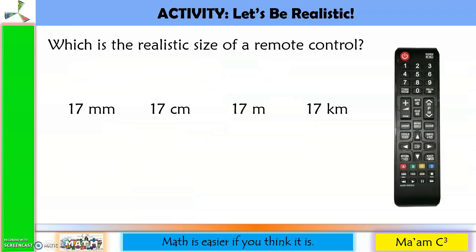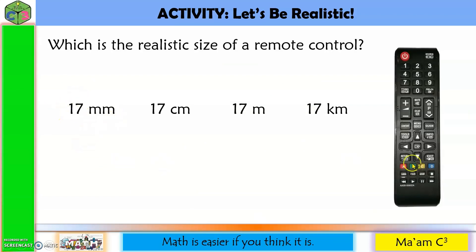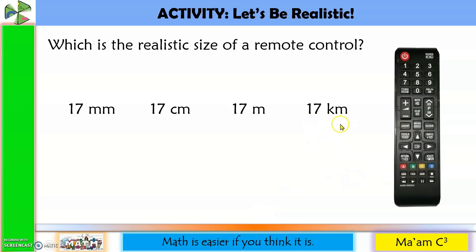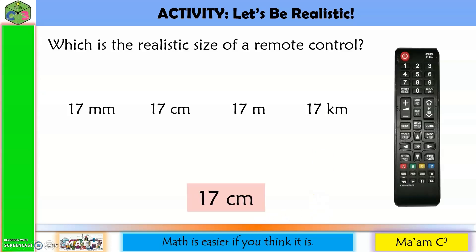Last one: which is the realistic size of a remote control — 17 millimeters, 17 centimeters, 17 meters, or 17 kilometers? Seventeen millimeters is only 17 times the thickness of an ID — not enough. Seventeen meters is 17 times the length of a walking cane — too long. Seventeen kilometers is the length of multiple bridges — definitely not. The correct answer is 17 centimeters.